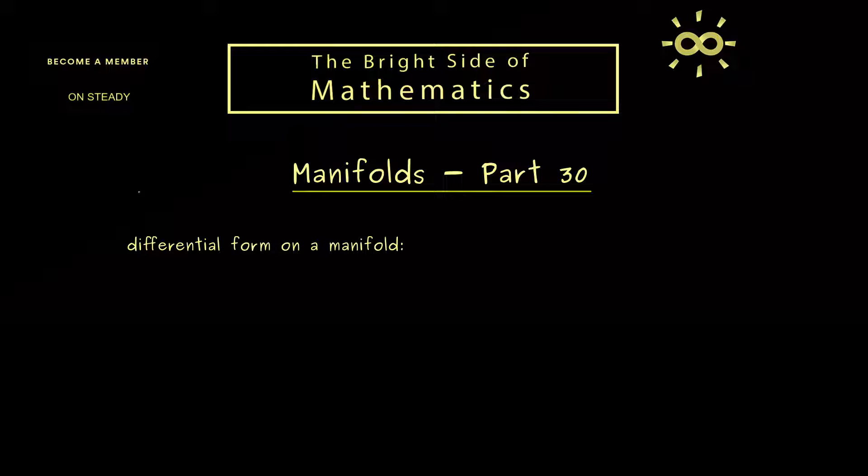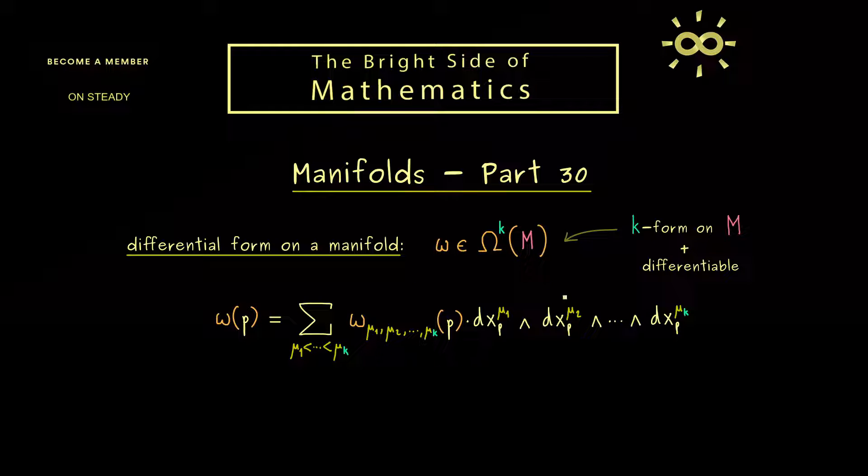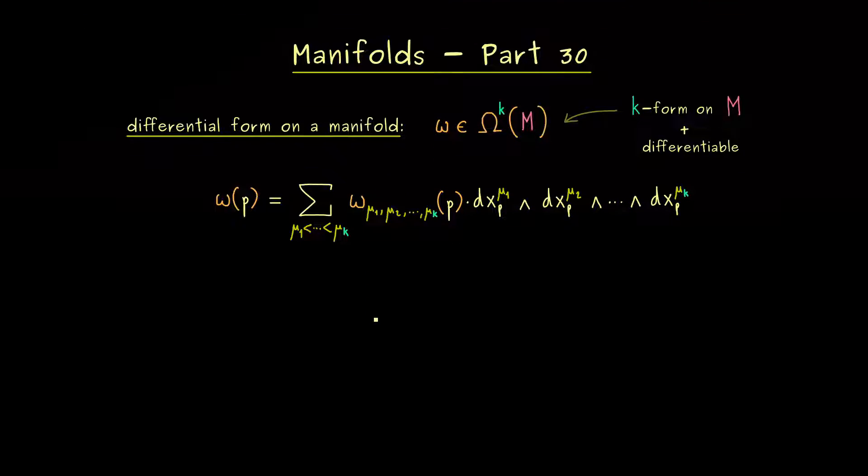Let's immediately start by recalling the definition of a differential form on a manifold. It's simply a so-called k-form on the manifold M which is also differentiable at all points, and the set of all these forms is denoted by Ω^k(M). Since the big characterization of a manifold is that it is locally Euclidean, we can also express this differential form in a local nature. Around every point p, we can write ω as this sum here, which means we have real-valued component functions that are differentiable, and at the end we have the wedge product of one-forms. Let's immediately write down some examples for differential forms.